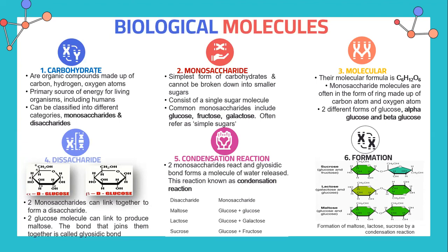The molecular formula for carbohydrates is C6H12O6. Monosaccharide molecules are often in the form of rings made up of carbon atoms and oxygen atoms. There are two different forms of glucose: alpha glucose and beta glucose.